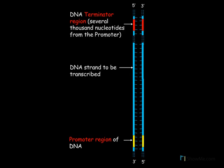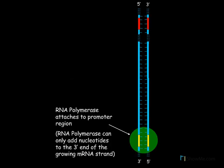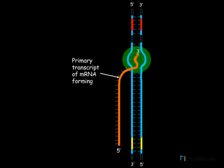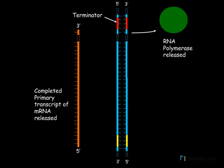Here we have our double DNA strand, which is the gene to be transcribed. It has at the beginning of the gene a promoter region where RNA polymerase will attach, and at the other end a terminator region where RNA polymerase knows to stop transcription. RNA polymerase attaches to the promoter region and begins transcription. The hydrogen bonds between the bases of the DNA helix weaken, the double helix opens up, and RNA polymerase works its way along the gene, adding nucleotides to the 3' end of the growing mRNA strand. This strand is known as the primary mRNA transcript. Once the terminator region is reached, the RNA polymerase is released and we have a completed primary transcript of mRNA.